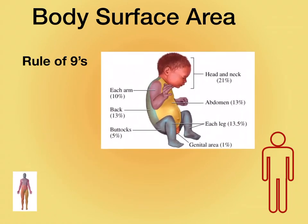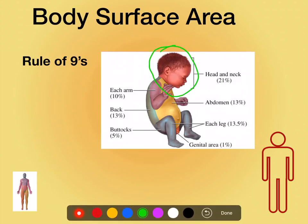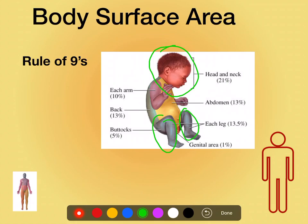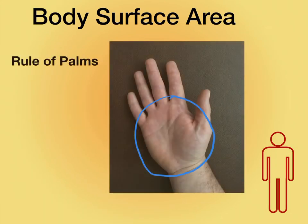Now this changes for children because their heads are proportionally larger than their legs. This picture doesn't show it exactly, and it varies a little bit with the age of the child, but the head should be now closer to about 18%, and then we take away the remaining part from each leg, so they drop to about 13.5%. That's how I always remembered it — with infants, the head's about 18%, the legs are now 13.5%.